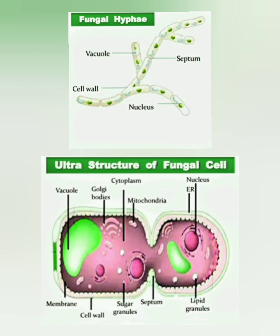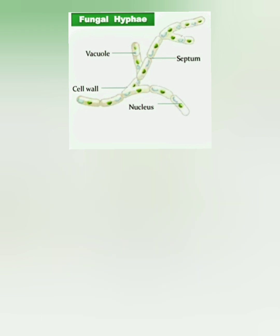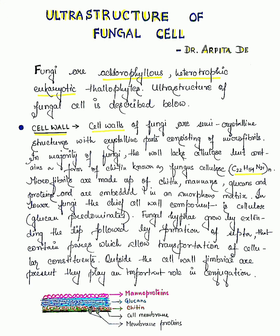The microfibrils are made up of mannans, glucans, and proteins, and are embedded in an amorphous matrix. In lower fungi, the chief cell wall component is cellulose where glucan predominates. Fungal hyphae grow by extending the tip, followed by formation of septa or cross walls that contain pores, which allow transportation of cellular materials — establishing connection between the two cells. Outside the cell wall, fimbriae are present, which play an important role in cell-to-cell conjugation.